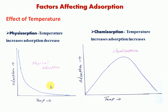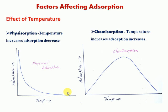Next parameter: effect of temperature. In physisorption, temperature increases and adsorption decreases. On a graph with temperature on the x-axis and adsorption on the y-axis, the curve slopes downward. This is because physisorption involves weak van der Waals forces of attraction. When temperature increases, these van der Waals forces are broken, so adsorption is reduced. At low temperature, adsorption is at an optimum maximum.